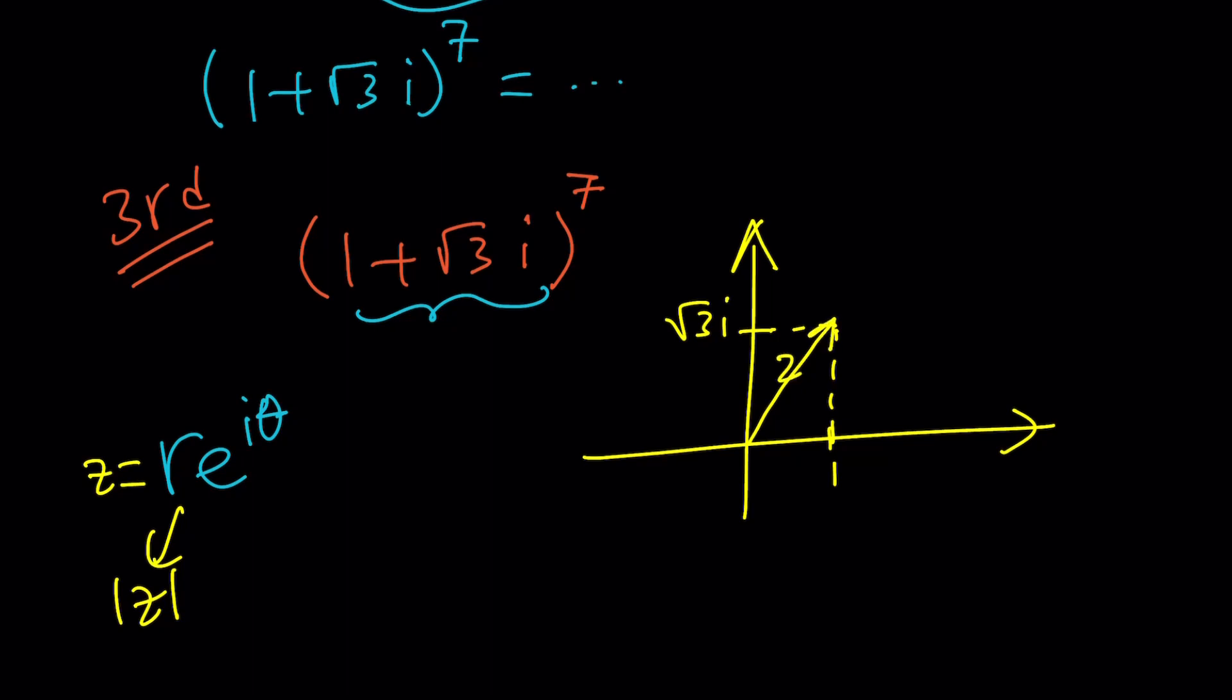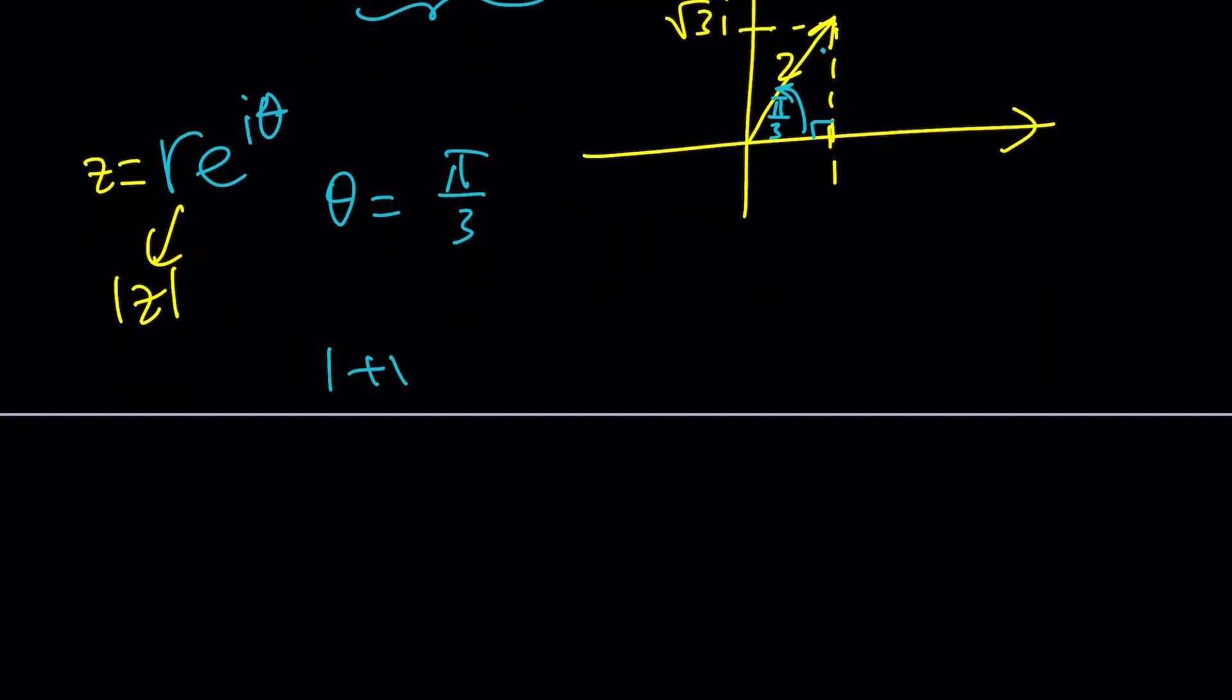But our number is going to make an angle like this. And if you know your trigonometry a little bit, this is two, this is one, this is root three. This is going to be pi over three radians or 60 degrees. That's the right triangle. So this will be 30 degrees or pi over six.